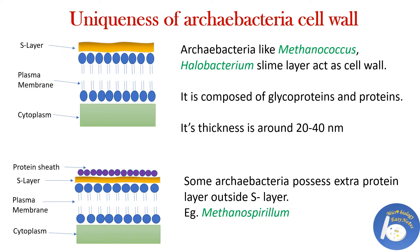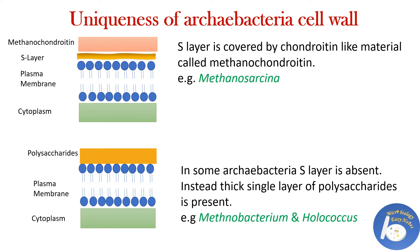In some archaebacteria there is an S-layer, and an extra protein sheath is also present outside the S-layer. Together, the S-layer and extra protein sheath act as a cell wall. In some archaebacteria, the S-layer is covered by a chondroitin-like material called methanocondroitin — example is Methanosarcina. Chondroitin is a substance present in connective tissue of higher eukaryotes.